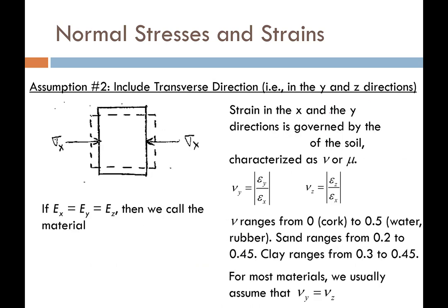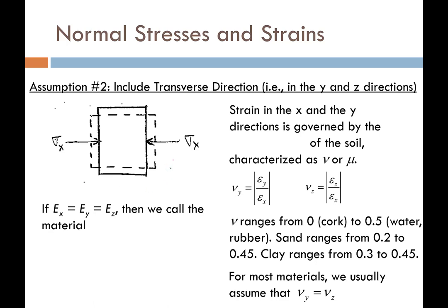Now let's look at a second assumption: we're going to include what happens in the transverse direction when I apply some stress sigma x to one axis of my element. When I stress an element along the x-axis, it shrinks in that direction but gets longer in the other axis. That phenomenon is what we call the Poisson effect. Strain in the x and y directions is governed by the Poisson's ratio of the soil, which determines how much, if I squeeze something in one axis, it will bulge out in the other axis.